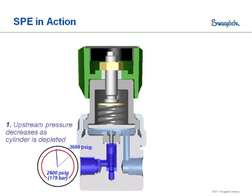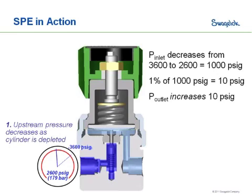As we use the gas in our cylinder, the pressure in the cylinder decreases from 3600 psi to 2600 psi. Since our regulator has a supply pressure effect of 1%, we're going to see a 1% increase on our outlet side of that change. So we dropped a thousand psi — 1% of that is 10 psi — so now our outlet pressure is going to rise from 50 psi up to 60 psi.